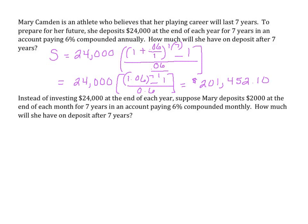But what if, instead of investing $24,000 at the end of each year, she decides to deposit $2,000 at the end of each month — so we're compounding it monthly — still for 7 years, still at a 6% interest rate? How much will she have after 7 years? Instead of a lump sum at the end of the year, we're depositing monthly.